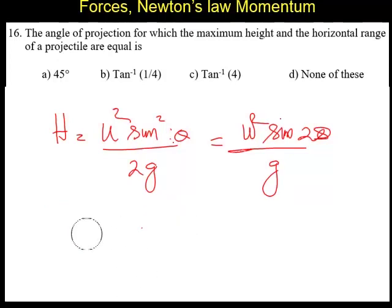We can cancel the similar quantities. U square, U square. We can remove g. Sine square theta equal to 2 sine 2 theta, which becomes sine square theta equal to 4 sine theta cos theta.